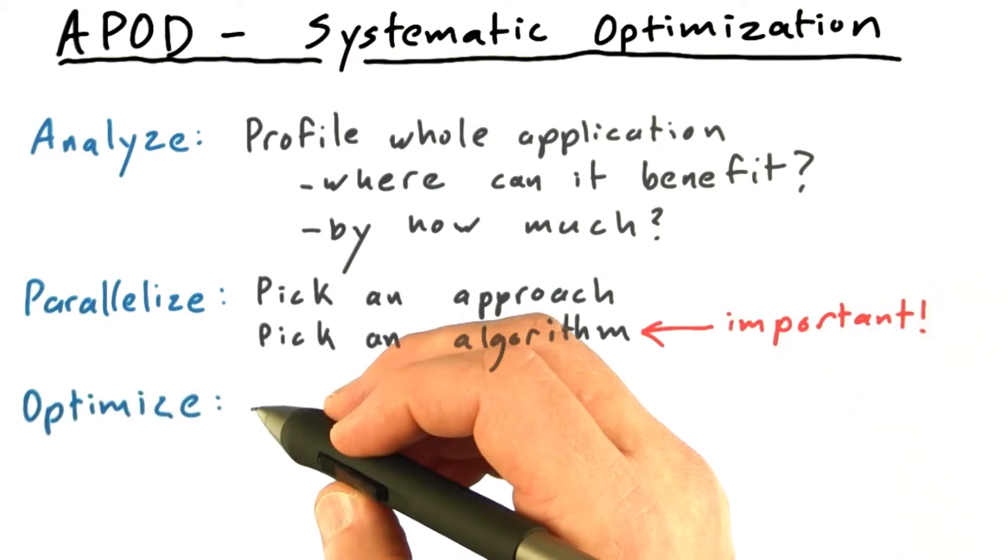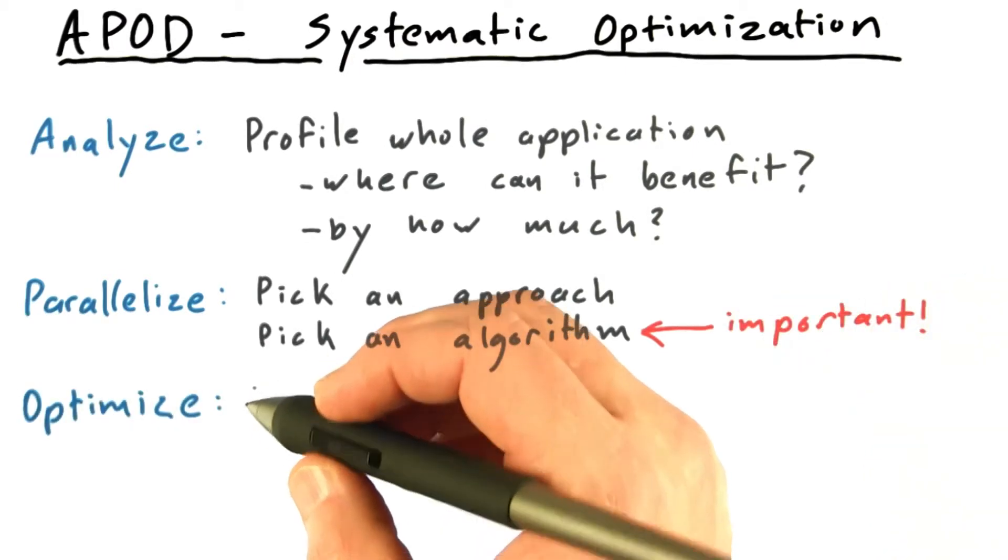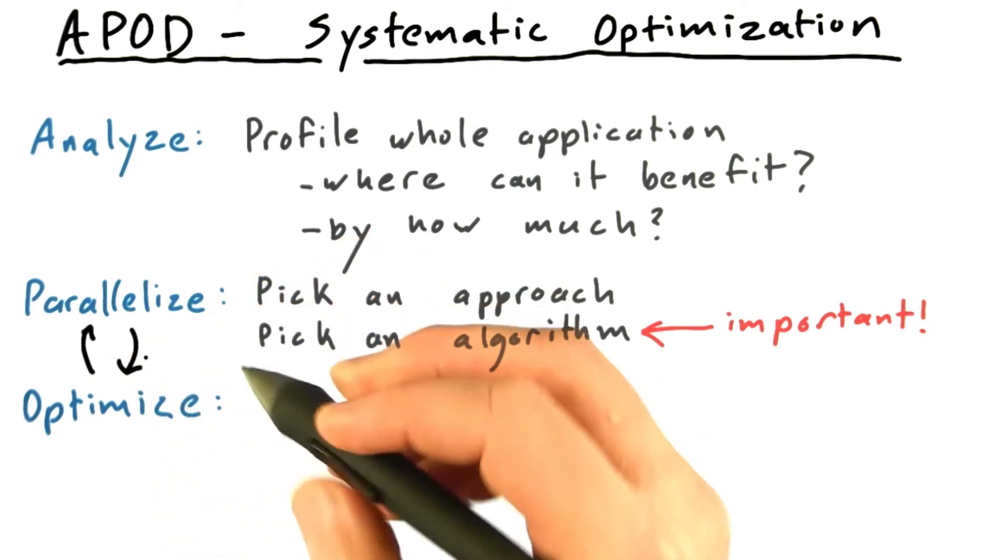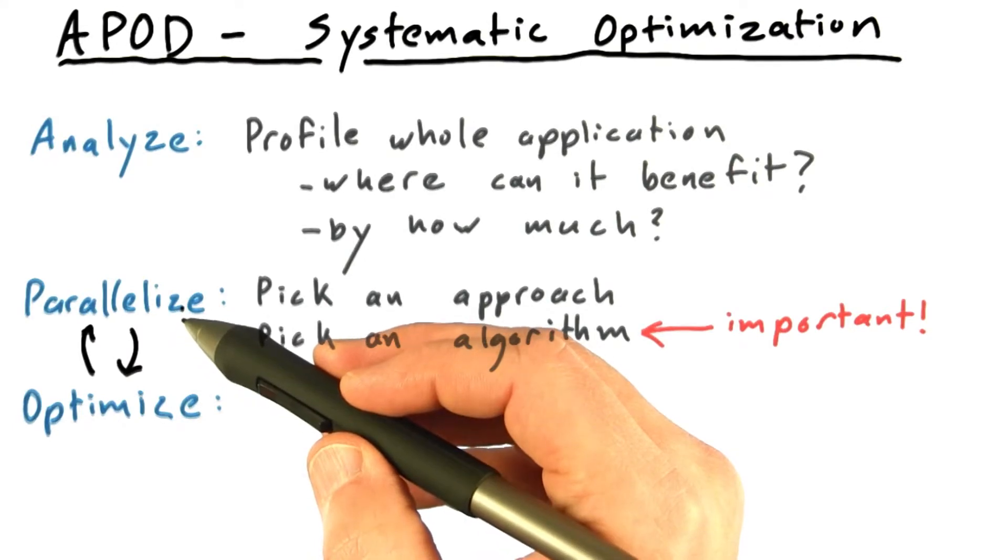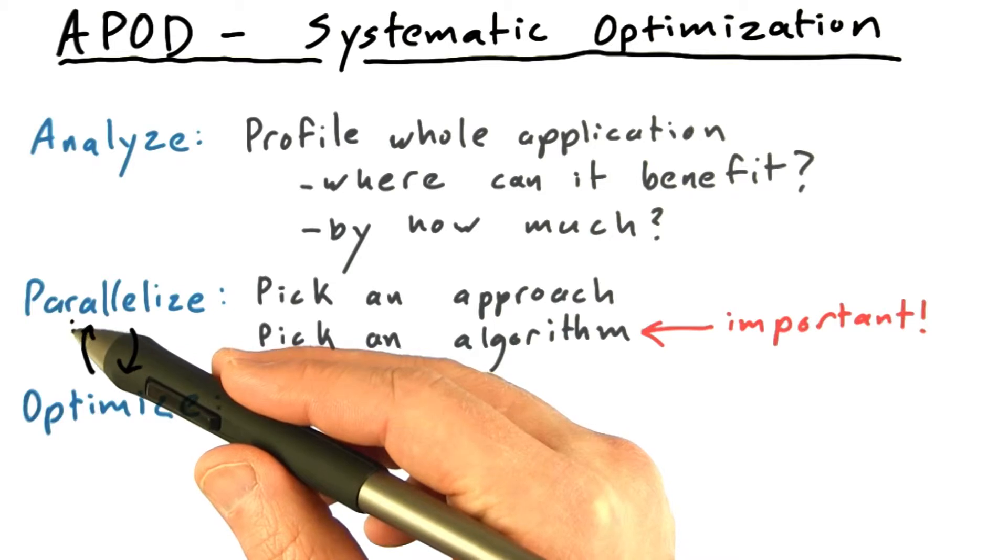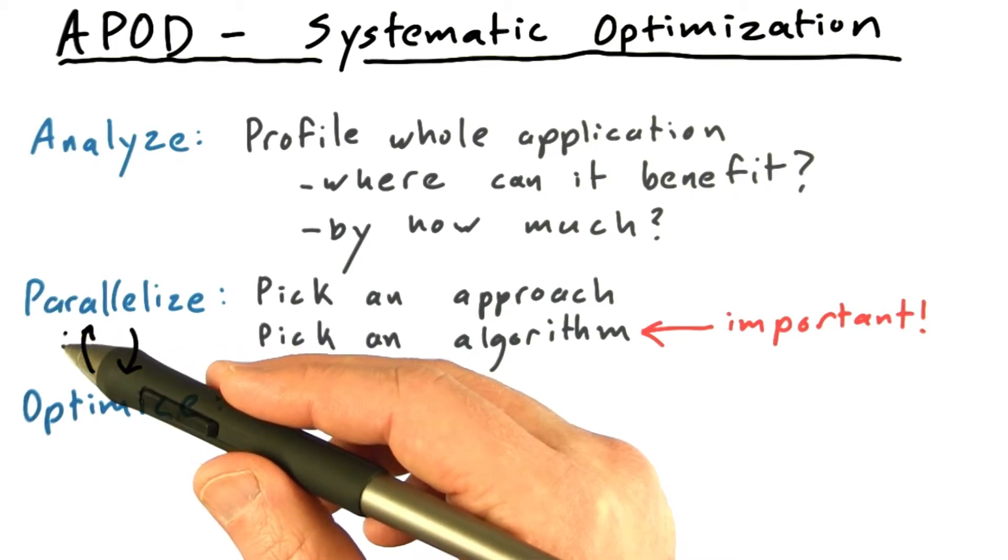Once you've decided how to parallelize your algorithm, then you want to optimize the code. There will be a cycle between these. As you'll see in the example, you try a parallelization, study how well it does, suggest some changes. That might suggest a way that you approach the parallelization differently.